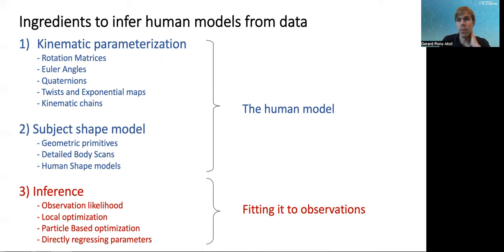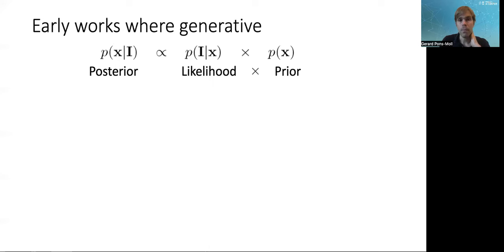For inference, what you want to do is find the maximum a posteriori of the model parameters x. These model parameters control, for example, the posture and the shape and the identity of the person, given some observations. If we're considering images, these observations might be the image i. So you want to find a maximum a posteriori.